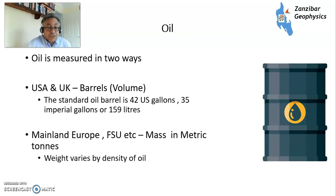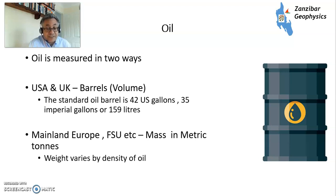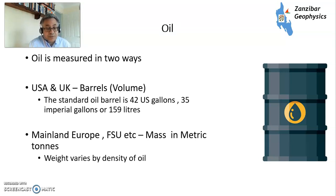Oil is measured in two ways. The USA and UK tend to use barrels of volume. The standard barrel was devised in the USA in the late 1800s at 42 US gallons, or 35 imperial gallons, or about 159 liters. Meanwhile, mainland Europe and the former Soviet Union do everything in mass — metric tons — which varies by the density of oil, something the Anglo world finds a bit unusual.